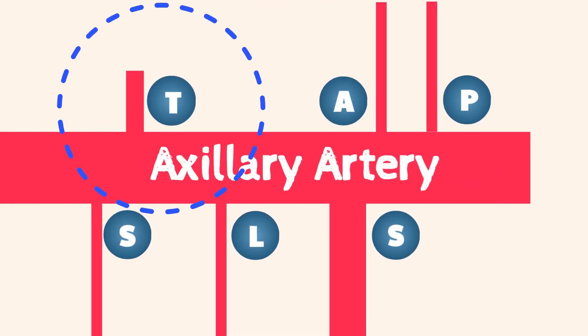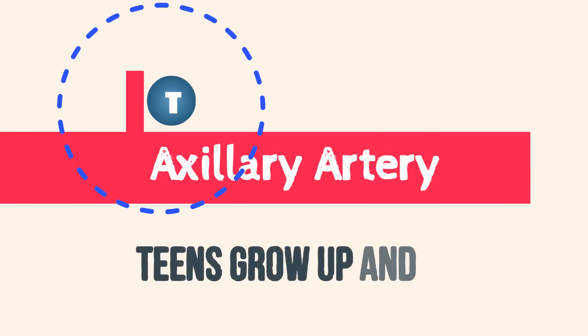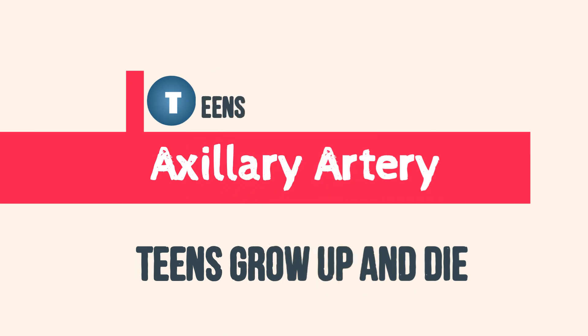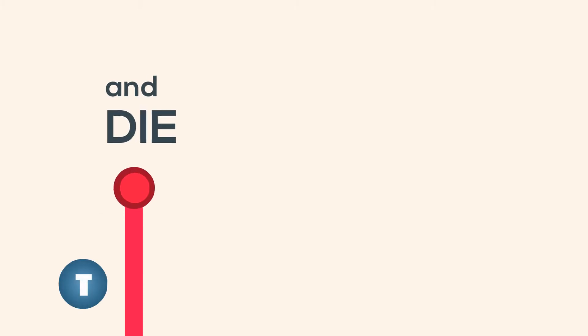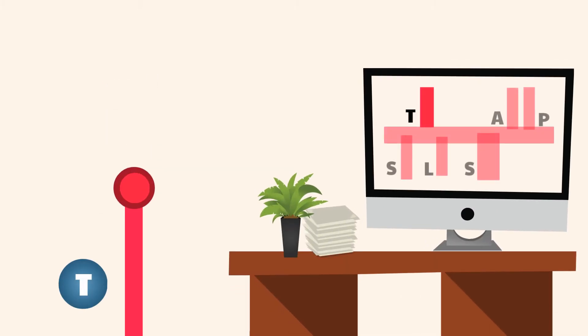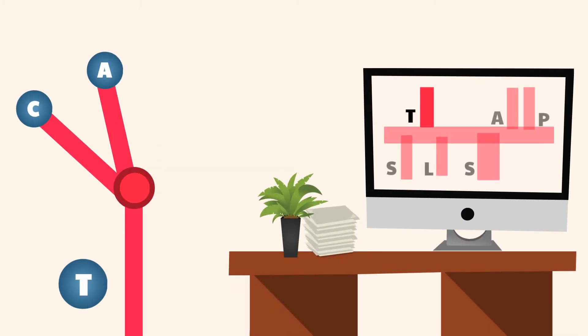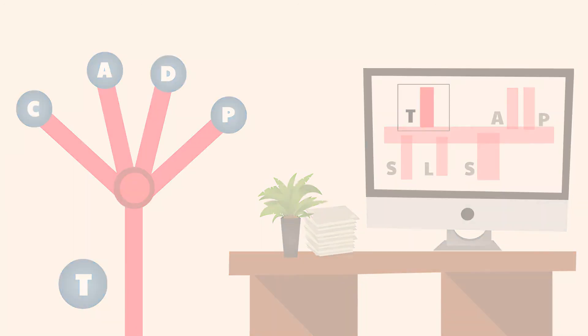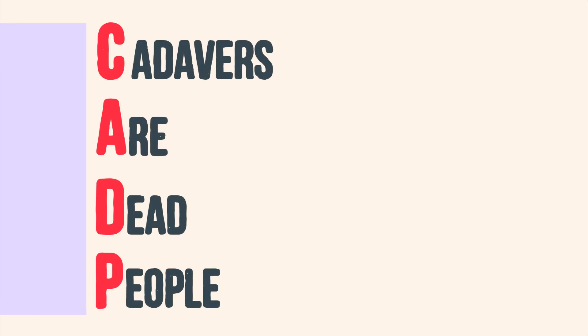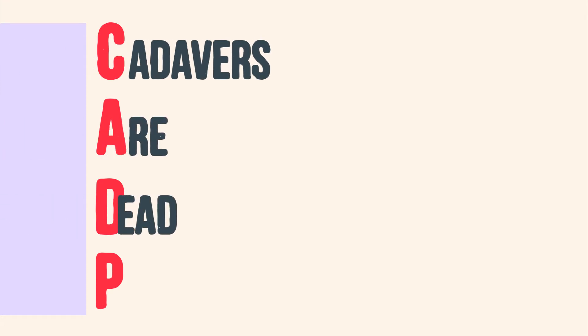For Teens, we'll remember this by: teens grow up and die. The thoracoacromial trunk — teens grow up and die — splits into four sub-branches: C, A, D, P. We can remember this by a mnemonic: cadavers are dead people.